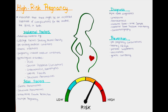Fetal factors for a high-risk pregnancy are when there is a suspicion or a confirmed case of genetic or chromosomal anomalies, structural anomalies of the baby, or if there is an intrauterine growth restriction. Also, the occurrence of multiple pregnancy, such as with twins or triplets, is classified as a high-risk pregnancy. We have a separate video on this topic in our gynecology playlist.